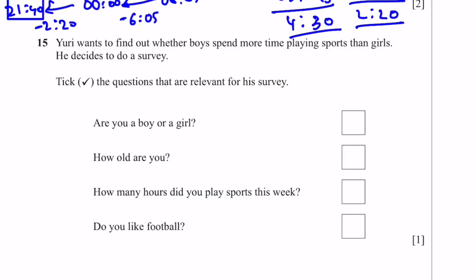Question 15. You want to find out whether boys spend more time playing sports than girls. He decides to do a survey. Tick the questions that are relevant for a survey: Are you a boy or a girl? How old are you? How many hours do you play sports this week? And do you like football? We need to find out information about the gender, because boys and girls are being compared. We need to find out about how much time they play sports. How old are you doesn't say we need to take into account the age. How many hours do you play sports, that's what's being compared. Do you like football? Irrelevant to the question. That's the answer.